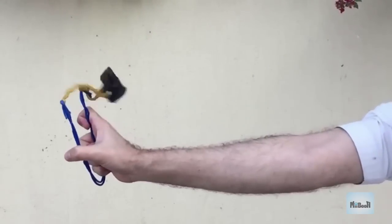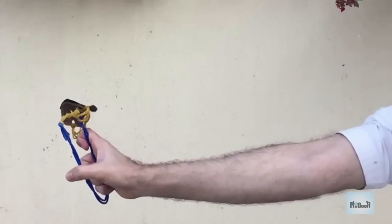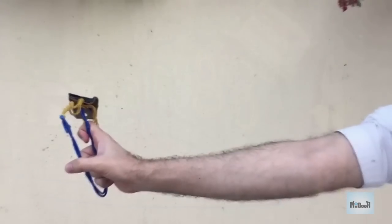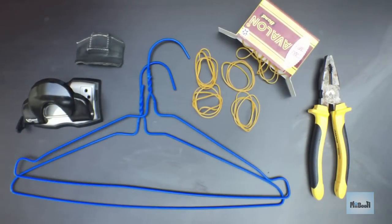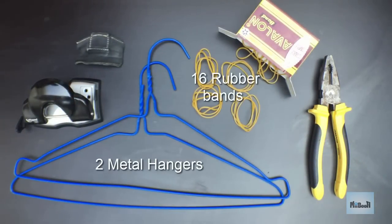Today I'm going to show you how to make a powerful slingshot out of some ordinary household items. This is what you'll need: two metal hangers, 16 rubber bands, size 1650. I bought these for less than a dollar at a local supermarket.